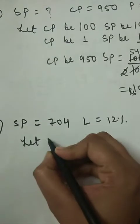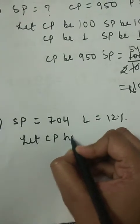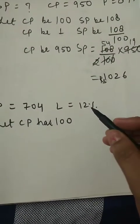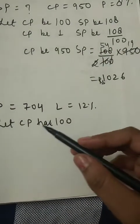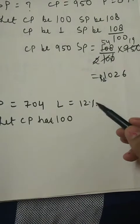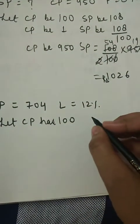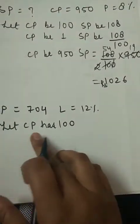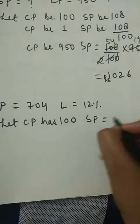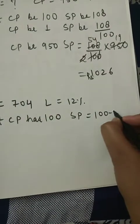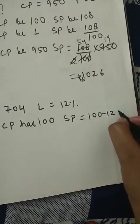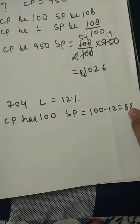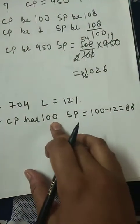We let cost price as 100. Since there is a loss, cost price was more than selling price. If cost price is 100, then selling price would have been 100 minus 12, that is 88. So selling price is 88 and cost price is 100, giving a loss of 12%.